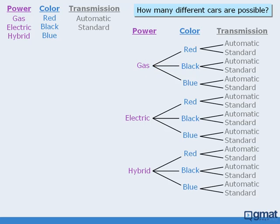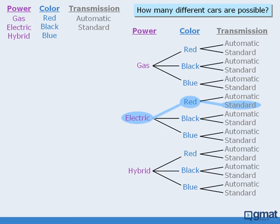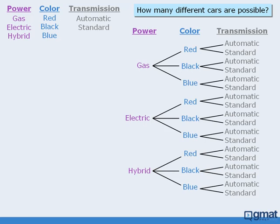This process continues until we have accomplished all three stages. Now that our tree is complete, notice that all of the different car configurations can be found in the various paths that exist in our tree. For example, this path represents a blue, gas-powered car with an automatic transmission. This path represents a red, electric-powered car with a standard transmission. And this path represents a hybrid car that is black with an automatic transmission. So the total number of different car configurations will be equal to the total number of different paths that exist in this tree.